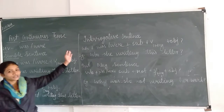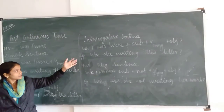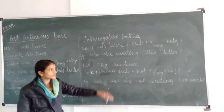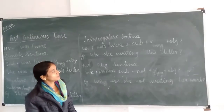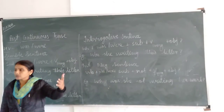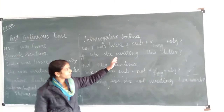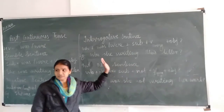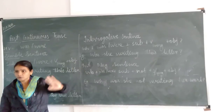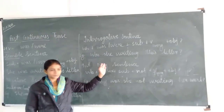Then comes the interrogative sentence. Sentence structure: WH word, then was/were, then subject, then verb ing form and object at the end. Example: Was she writing this letter? This is an example of an interrogative sentence — but which kind of question? A yes/no question.